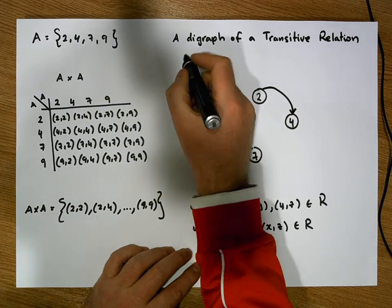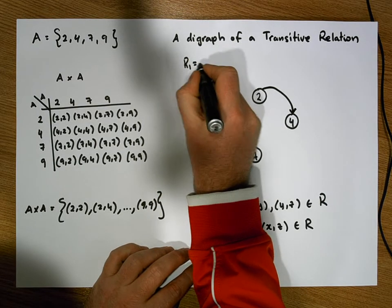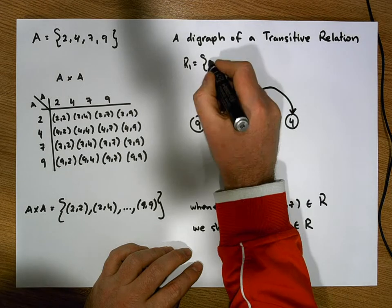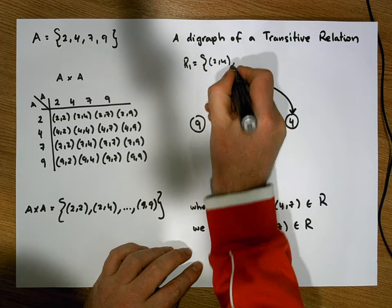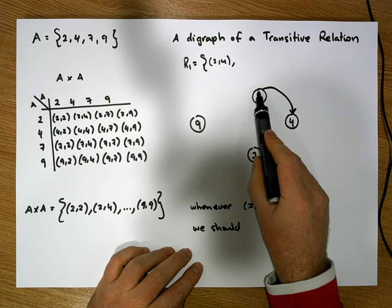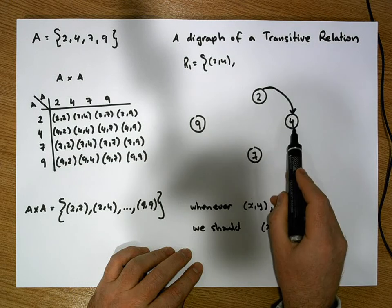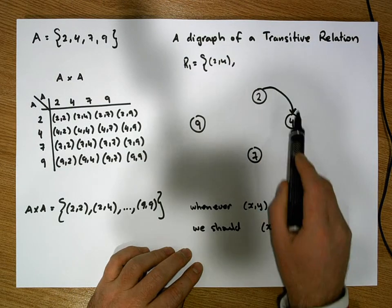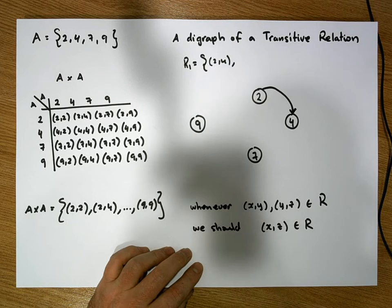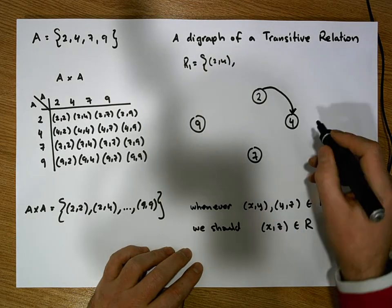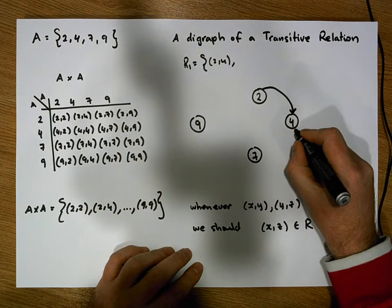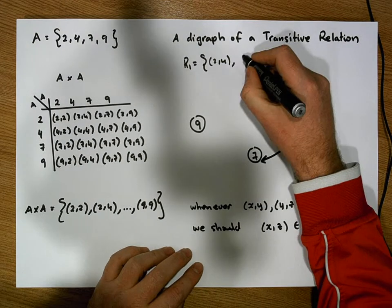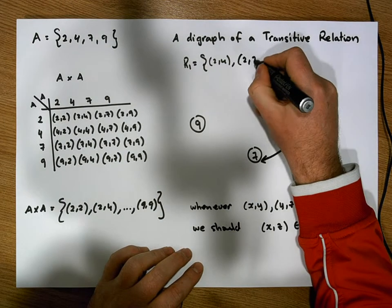Let's create a hop from node 2 to node 4. At this stage this relation — let's call it R1 — contains the ordered pair (2, 4). So we have a transition in our graph from 2 to 4. Now let's create another hop: we're going to go from 4 to 7, so R1 also contains the ordered pair (4, 7).